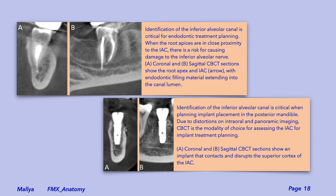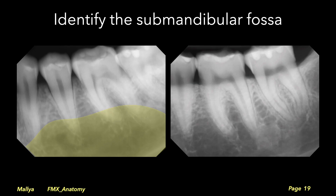Identification of the inferior alveolar canal is critical for endodontic treatment planning for mandibular molars. When the root apices are in close proximity to the inferior alveolar canal, there is an increased risk for nerve damage from endodontic over-instrumentation. Likewise, identification of the inferior alveolar canal is critical when placing implants in the posterior mandibular region. Given the inherent distortions with periapical and panoramic imaging, CBCT imaging is the modality of choice for both these situations.